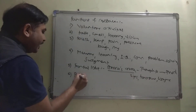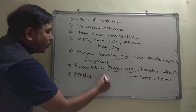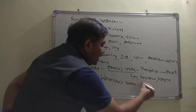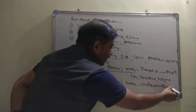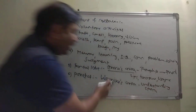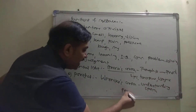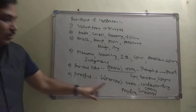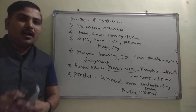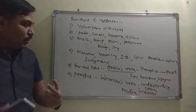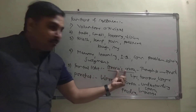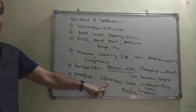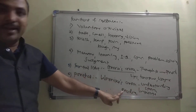In the parietal lobe, there is another area called Wernicke's area. This area helps in understanding speech — understanding what the other person is saying. It also helps in understanding reading and any kind of language. So if you are listening to this lecture and understanding it, your Wernicke's area is working.